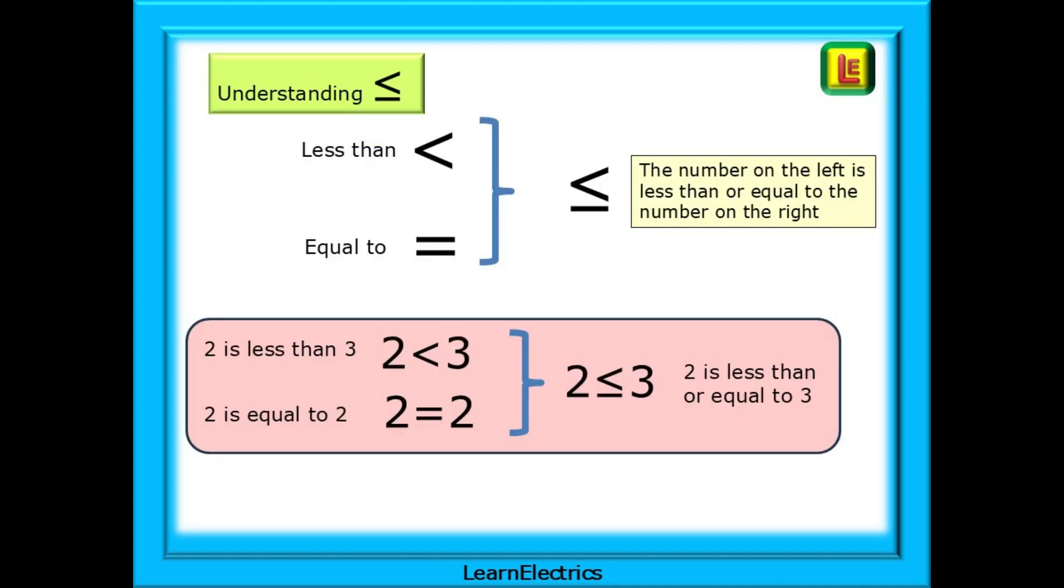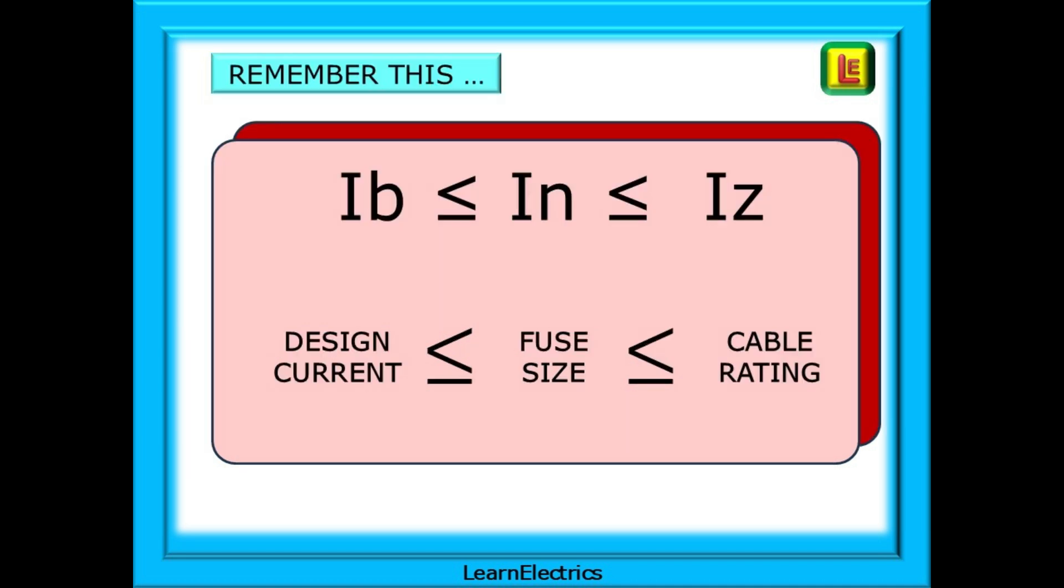We can take a moment to look at the funny symbol shown in the formula. It's very important that you understand this symbol and that you get it the correct way round. We can have a less than symbol where any number on the left side must be less than the number on the right. Then we can have an equals symbol where the numbers on both sides must be exactly equal. Now we can combine them so that we can say that the number on the left is less than or equal to the number on the right. And here is an example. Using the less than symbol, 2 is definitely less than 3. And the equals symbol, 2 is exactly equal to 2. Combine the 2 and we can say that 2 is less than or equal to 3.